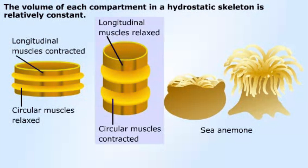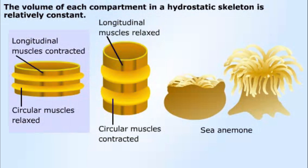In general, each compartment has circular muscles surrounding it and longitudinal muscles running lengthwise along the compartment. When the diameter of a compartment is decreased by the contraction of the circular muscles, the length of the compartment must increase.